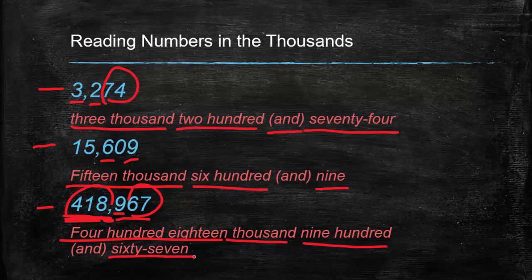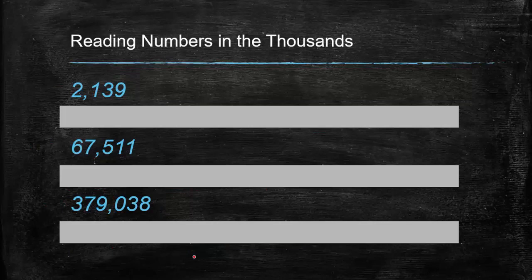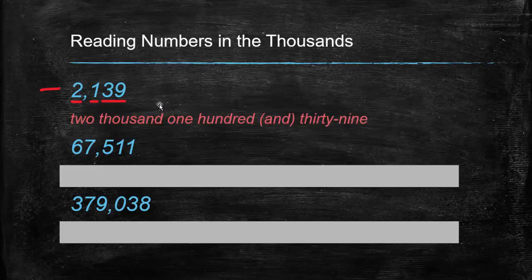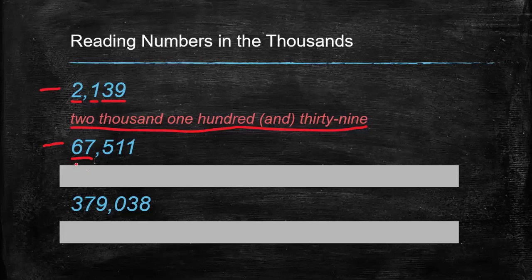It's going to take a little practice, but once you get more practice it'll become more natural. Let's take a look at some more examples and let you try. The first number — two thousand one hundred thirty-nine. Let's check: that's right, it is two thousand one hundred and thirty-nine.